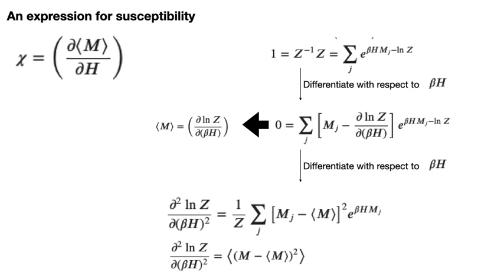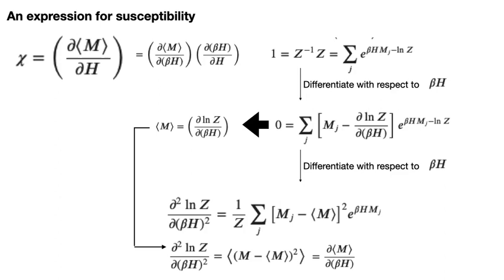This result brings us tantalisingly close to an expression for the susceptibility chi in terms of an ensemble average. Remember, the susceptibility is the derivative of the magnetisation with respect to the field. The ensemble average at the bottom of the slide is thus equal to the derivative of the magnetisation with respect to beta h. We want the susceptibility, which is the derivative with respect to h and not beta h. This is easily overcome using the chain rule, which allows us to write the derivative of the magnetisation with respect to h as a product of derivatives. The second derivative in this product is just equal to beta. We thus arrive at the final result: the susceptibility can be computed by taking the following ensemble average.